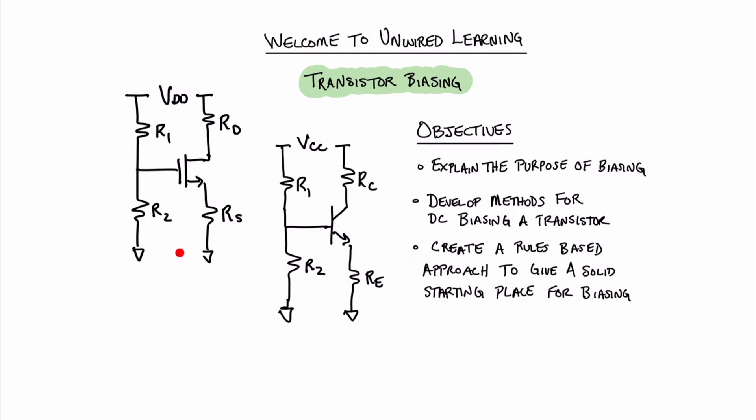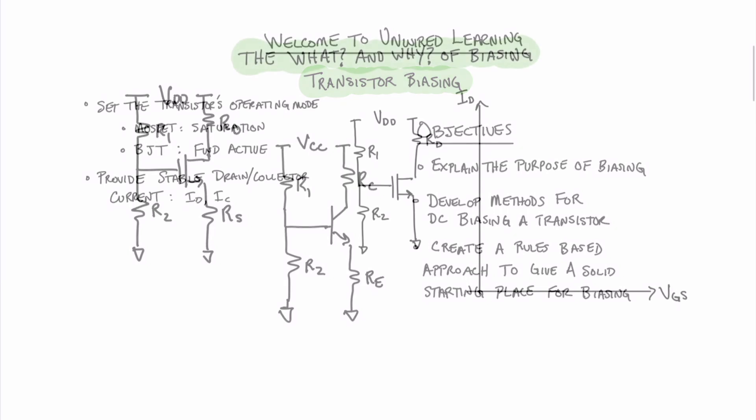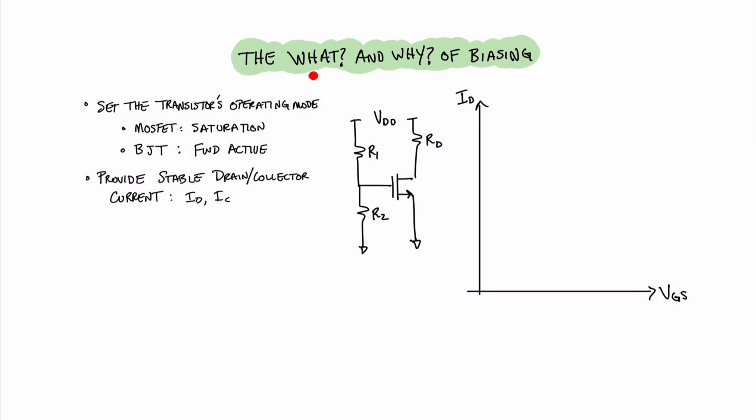Over here on the left, you can see a couple of different circuits, a MOSFET circuit and a BJT circuit. Both of these circuits are what we call four-resistor biased. Transistor biasing is often the first step in building a transistor amplifier circuit, as we'll see in future episodes. So the questions are, what and why do we bias a circuit?